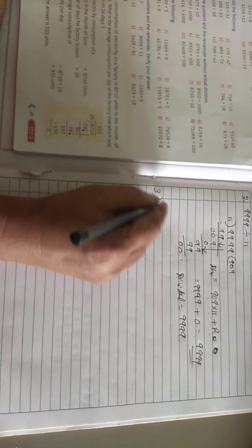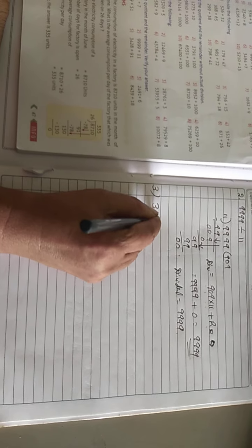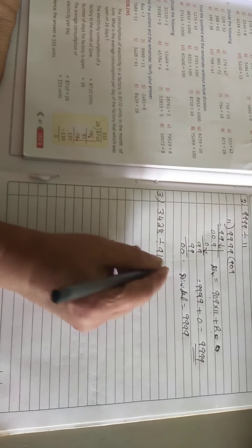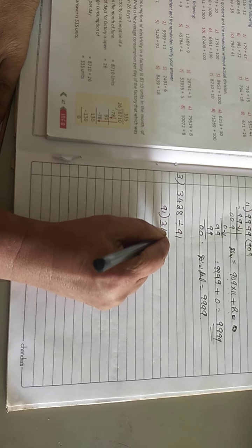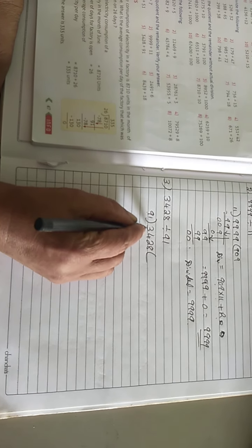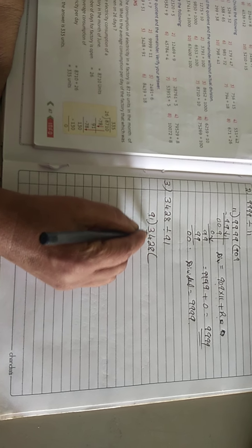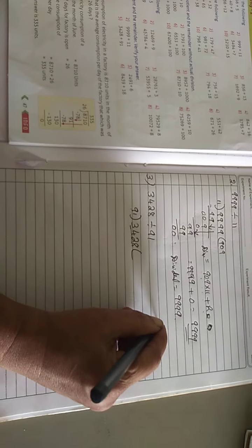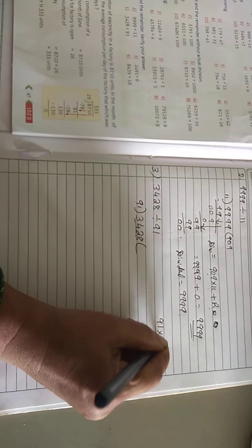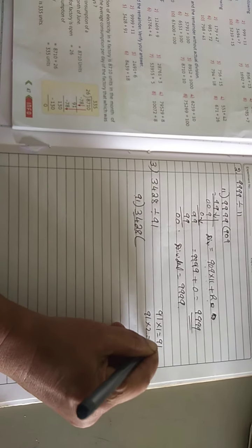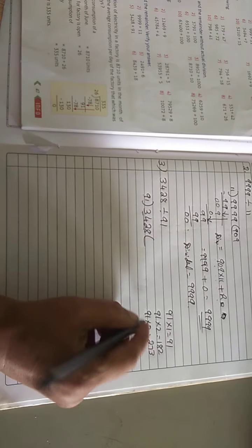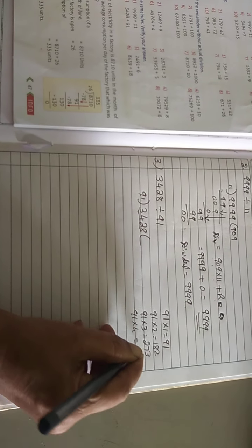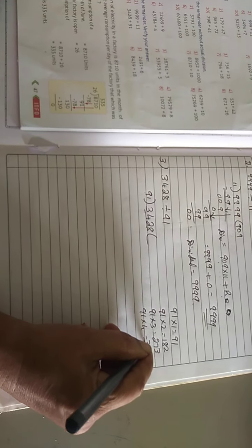Another sum I will do children: 3428 divided by 91. So from 91 you have to divide 3428. Here 2 digits — I will take 2 digits, but here 34 is there, it is not possible, so I will take 3 digits. Write in the working column: 91's table. 2 1's are 2, 2 9's are 18. 91 3's are: 3 1's are 3, 9 3's are 27. 91 4's are: 4 1's are 4, 4 9's are 36.